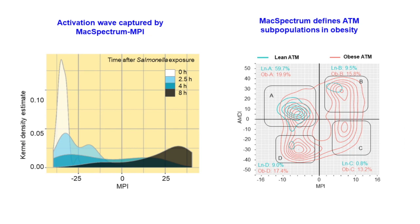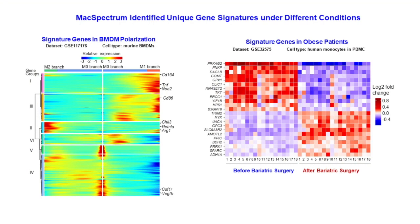MacSpectrum consistently identifies known features of macrophages from human and mouse origins in in vitro or in vivo models, and in bulk or single-cell RNA-seq formats — such as the dynamic activation waves revealed in response to pathogen exposure along the MPI axis, or the distribution dynamics of freshly isolated ATMs under lean or obese conditions. Cells on MacSpectrum can also be gated according to their MPI and AMDI values for further analysis, such as signaling pathway enrichment, signature gene identification, or activation program analysis.